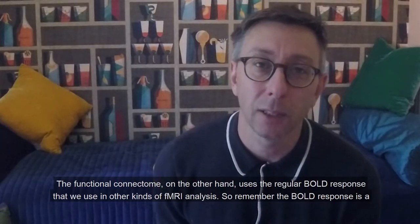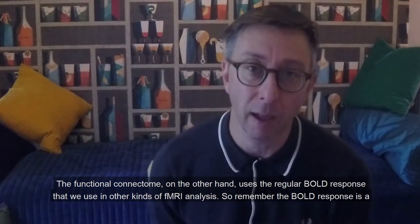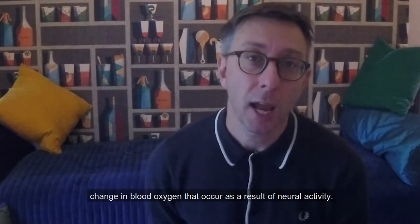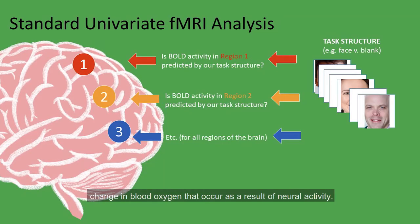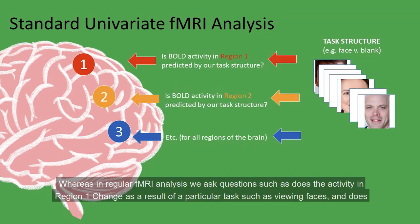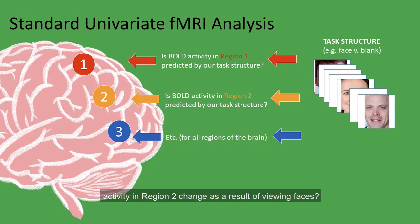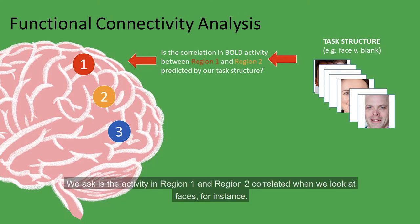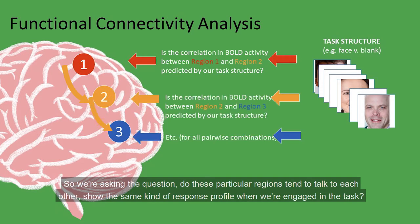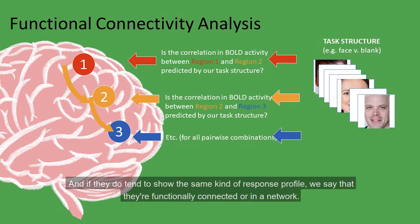The functional connectome uses the regular BOLD response used in other kinds of fMRI analyses — changes in blood oxygen that occur as a result of neural activity. Whereas in regular fMRI analyses we ask whether activity in a region changes as a result of a task such as viewing faces, in a functional connectivity analysis we ask whether activity in region one and region two are correlated when we look at faces. We're asking whether particular regions tend to talk to each other and show the same response profile when we're engaged in a task. If they do, we say they're functionally connected or in a network.